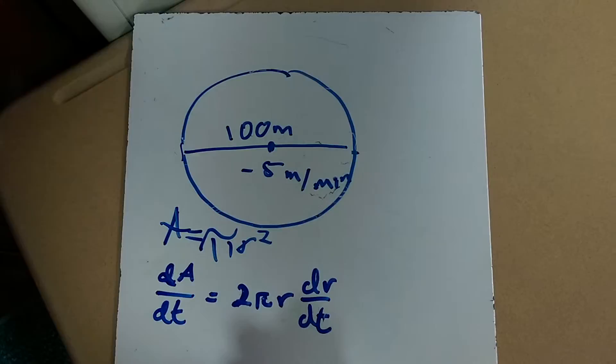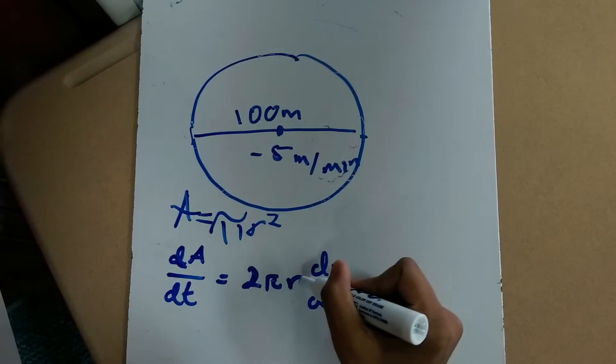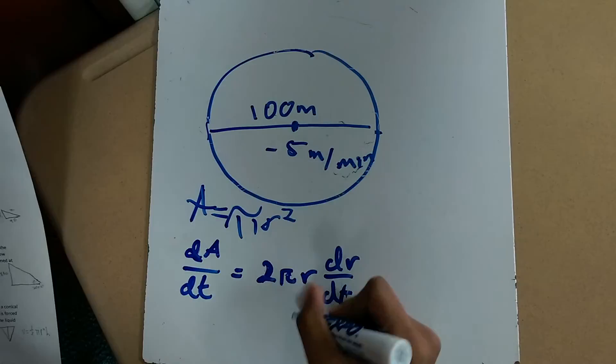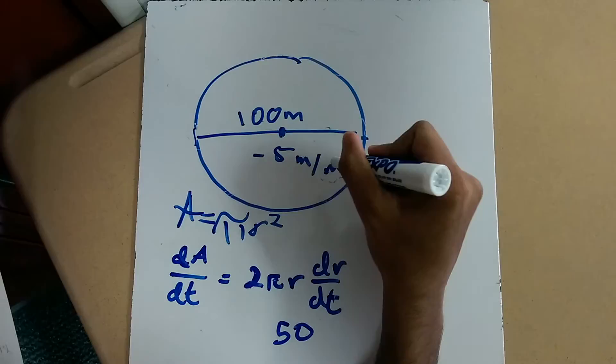Okay, so now all we need to do is plug in the numbers and solve. So the radius is half of 100, so that will be 50. And dr/dt will be negative 5 because that is the rate that it's being pulled back in.